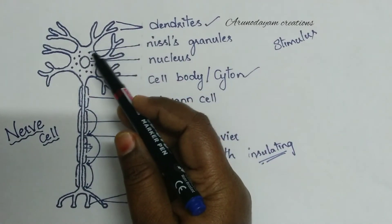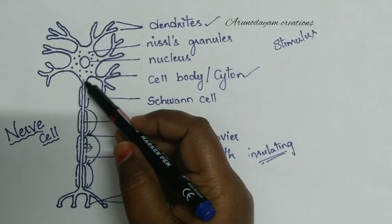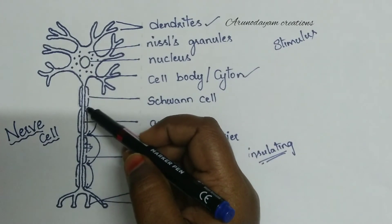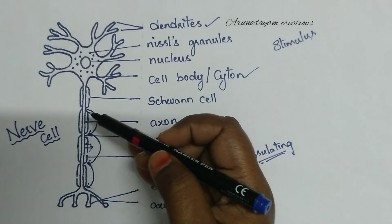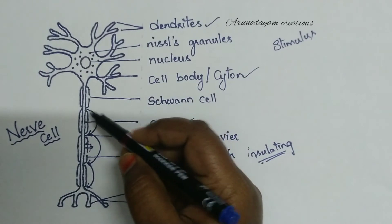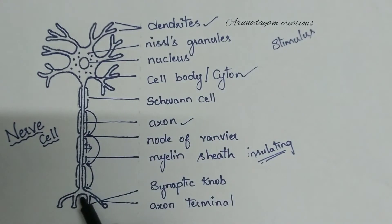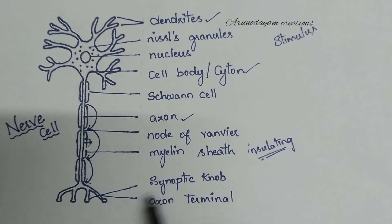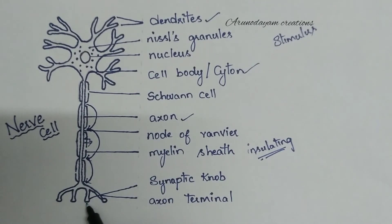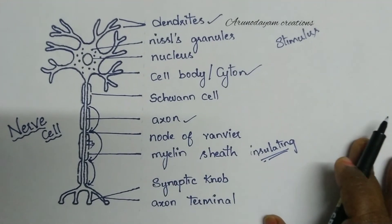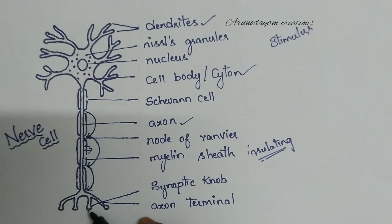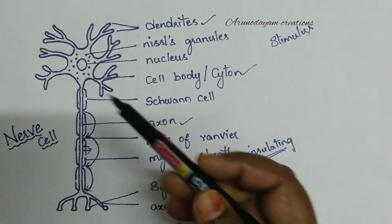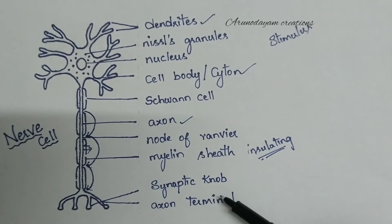So information first reaches the dendrites, then passes from the dendrites into the axon. The myelin sheath prevents leakage of information, while the gaps in it allow information to travel fast. At the end of the axon, small branches are present called axon terminals, which have some swellings at their base called synaptic knobs.